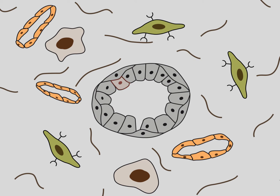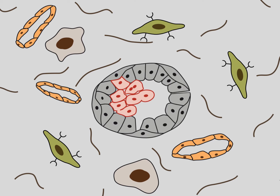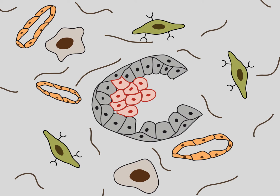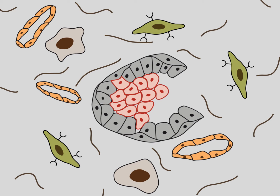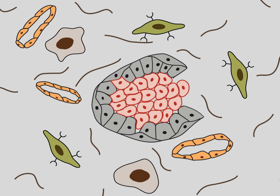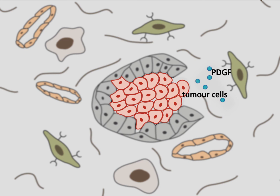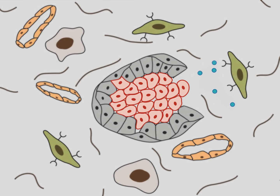After the malignant transformation of an epithelial cell, the carcinoma cells spread within the glandular lumen. The tumor cells then penetrate the normal epithelium and make contact with the surrounding microenvironment. Tumor cells produce cytokines and growth factors, which affect the cells of the microenvironment.